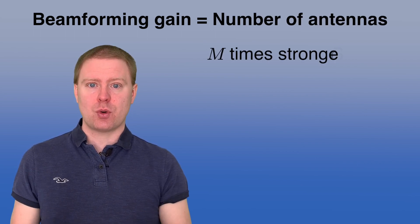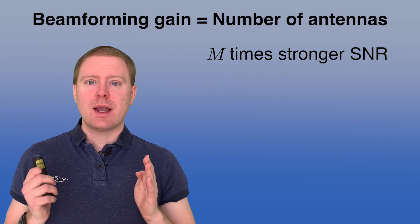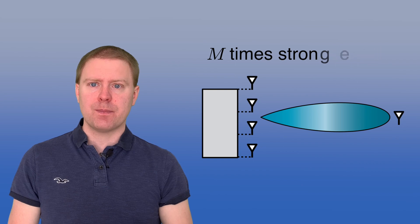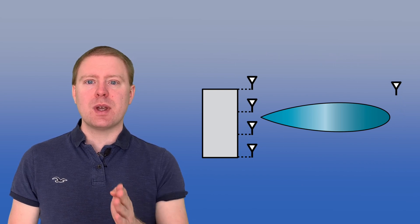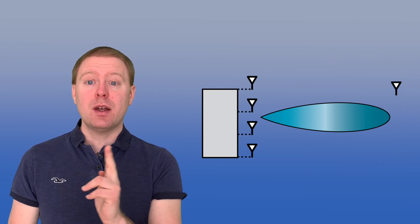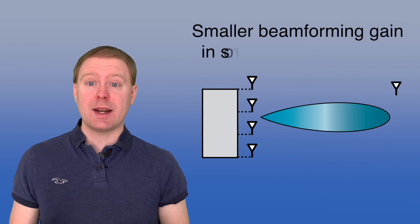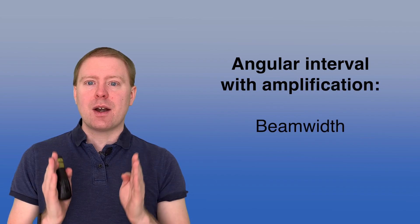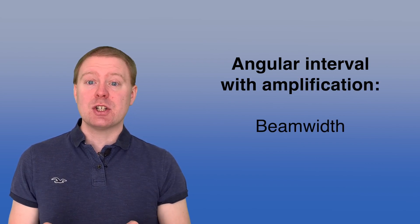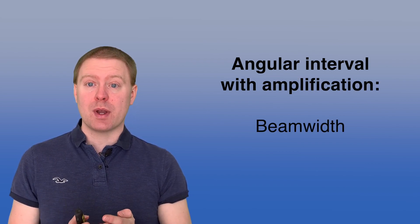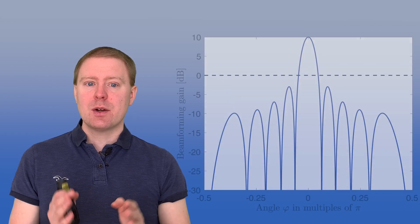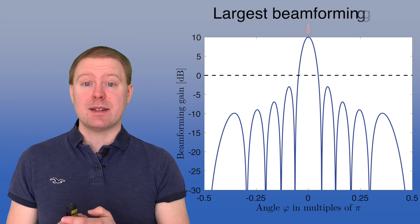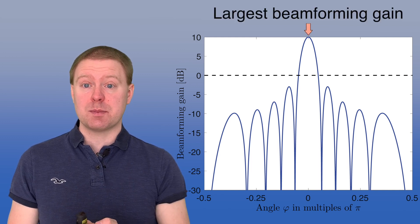We get this M-times stronger SNR, and in the line-of-sight channel we are forming a beam towards the angular direction of the user. If someone else is located at a similar angle they will also see a beamforming gain, though not equal to M but a smaller number. The angular area where amplification occurs is called the beam width of the transmission. Here is an illustration showing the beamforming gain in decibel scale with 10 antennas, giving a maximum beamforming gain of 10 dB.